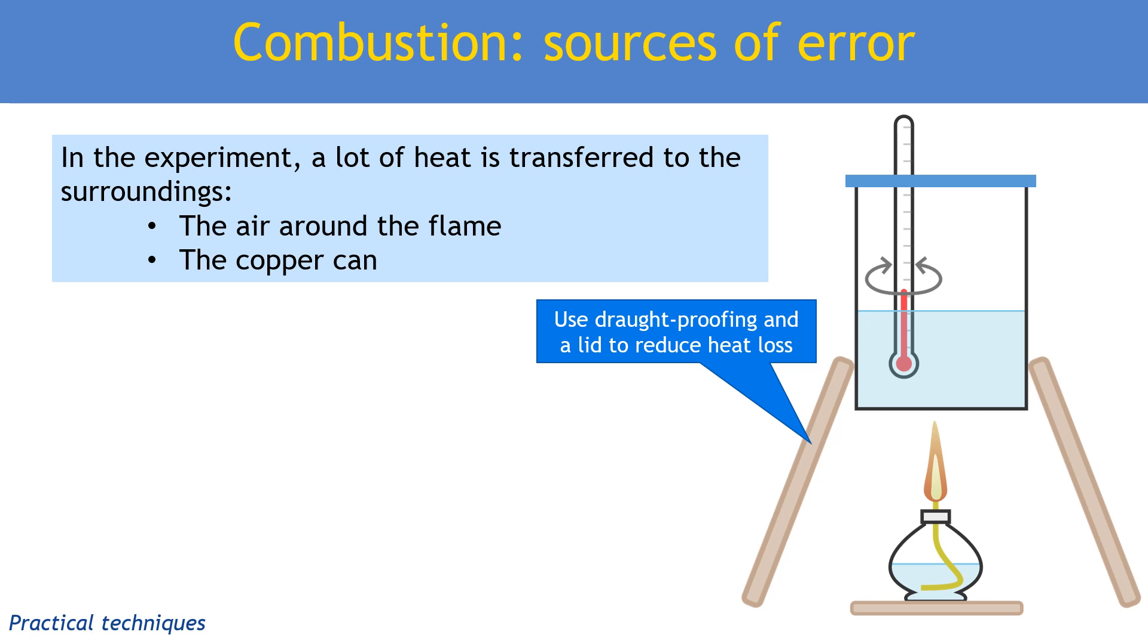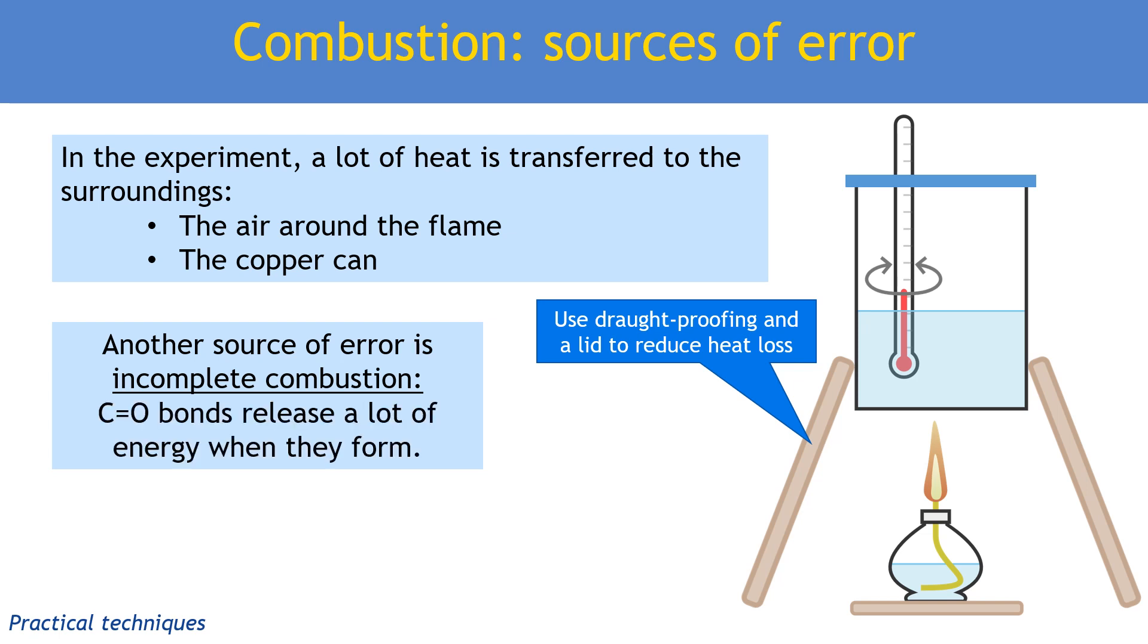Another big source of error is incomplete combustion of the fuel. This is particularly a problem for higher molecular mass fuels that don't burn as cleanly, making more carbon and carbon monoxide. You can see that by the buildup of soot on the bottom of the can. A lot of the energy released in complete combustion is due to the high energy of the C=O bonds made when we make carbon dioxide. If we make carbon or carbon monoxide instead, we're not making as many of these C=O bonds and not releasing as much energy.